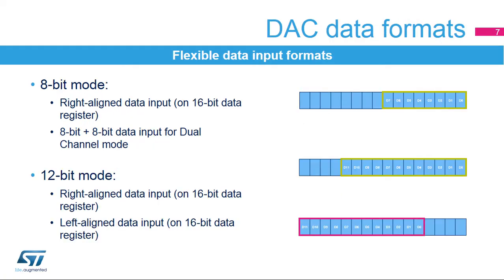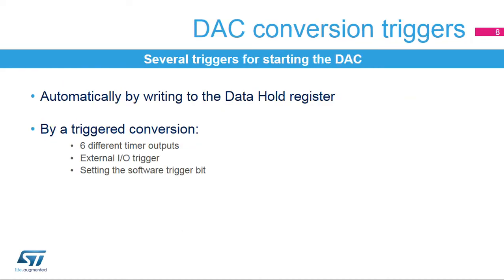The DAC can support different input formats. In 8-bit mode, it's a right-aligned 8-bit data format. In dual-channel mode, it's an 8-bit plus 8-bit data format, in order to provide input data for two DACs simultaneously. In 12-bit mode, either a right- or left-aligned mode can be used for input data. DAC output conversion is started by writing to the data hold register by software. Six different timer outputs, an external I/O, or software can trigger the DAC conversion.